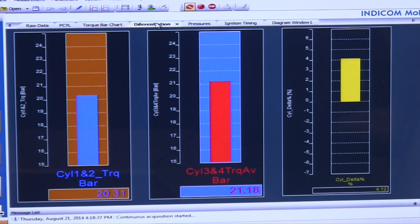So I'm going to go ahead and pause it here and explain what we're looking at. So cylinders one and two, the average pressure is 20.31. Cylinders three and four, the average pressure 21.18. And that gives us a cylinder delta of 4.12%. So what we're looking at is cylinders three and four have a four percent higher pressure than cylinders one and two. And this is because the ignition timing is advanced because it can take advantage of that higher octane fuel and not have knock. So the knock sensors in cylinders one and two are preventing it from advancing that timing anymore.